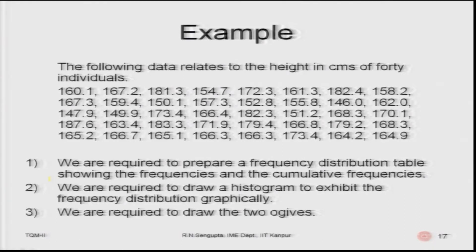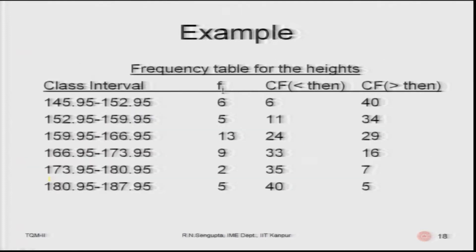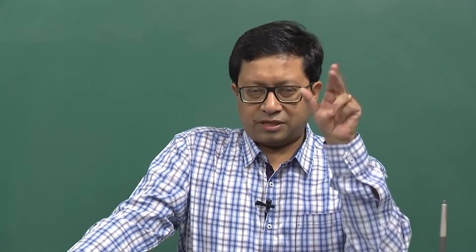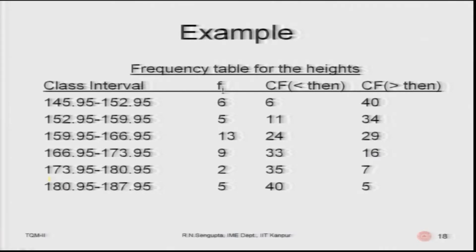The following data relates to the height in centimeters of 40 individuals, starting from 160.1 to 164.9. We are required to prepare a frequency distribution table, draw a histogram, and draw the two ogive curves. The frequency table classes have been made so that the first interval is 145.95 to 152.95, ensuring none of the values fall on a boundary.